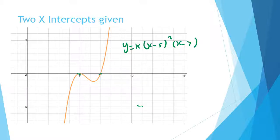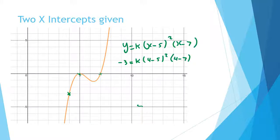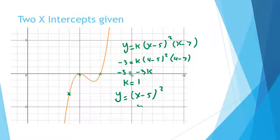We find k using the point (4, negative 3). Substituting: negative 3 equals k times (4 minus 5) squared times (4 minus 7), which is k times (negative 1) squared times (negative 3) equals negative 3k. So k equals 1. The final equation is y equals (x minus 5) squared times (x minus 7).